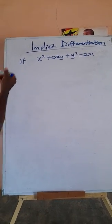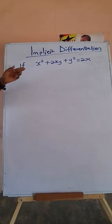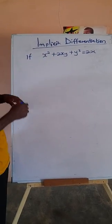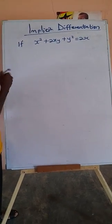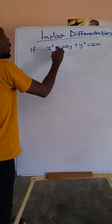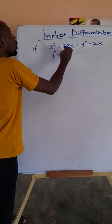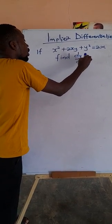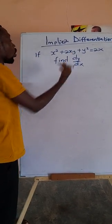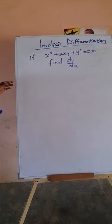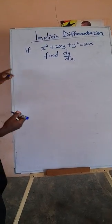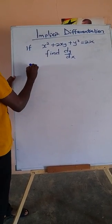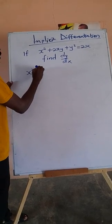If x squared plus 2xy plus y squared is equal to 2x, find dy/dx. You see that y is not being expressed in terms of x, so we'll use implicit differentiation to differentiate this.